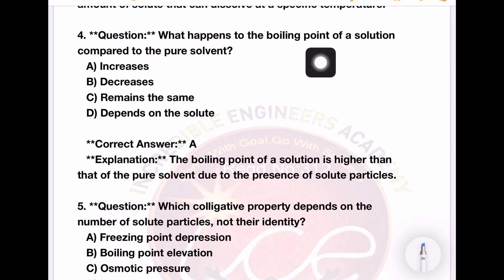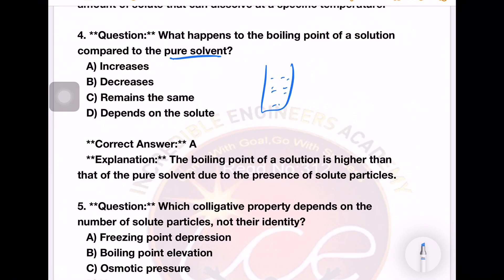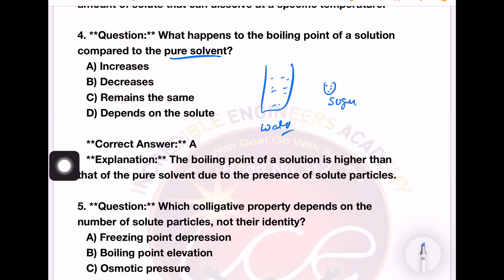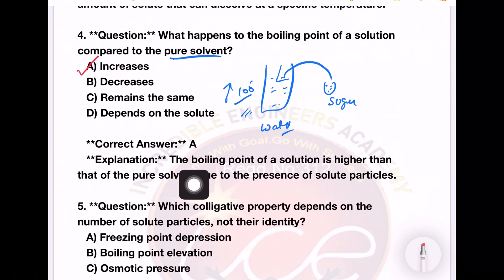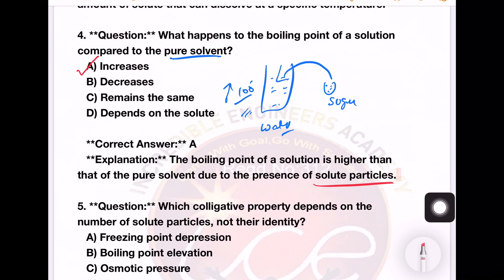Next question: What happens to the boiling point of a solution compared to the pure solvent? For example, water is the solvent — the largest quantity. The boiling point of pure water is 100 degrees. If we add sugar, the boiling point of the solution becomes higher than 100 degrees. The boiling point of the solution is higher than the pure solvent due to the presence of solute particles.